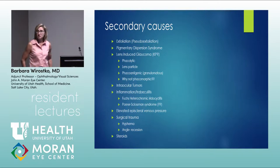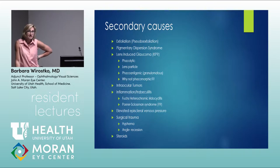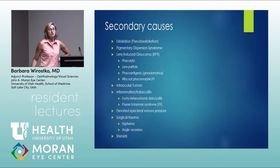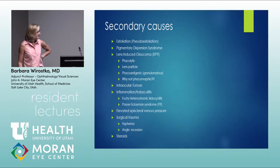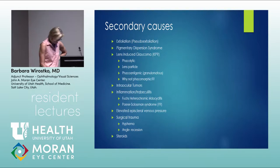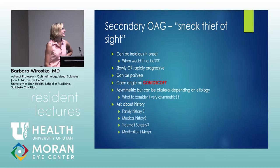Fuchs heterochromic iridocyclitis is a board favorite. It's usually unilateral with anterior chamber inflammation. The telltale sign is heterochromia — the instructor declines to say which eye is abnormal.